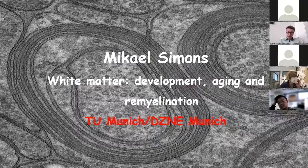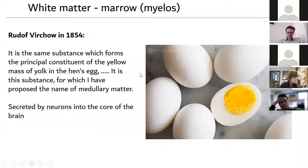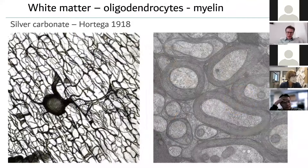I will go back in history: in 1854, Rudolf Virchow was the first to describe the white matter — the marrow of the brain — and compared it to the yolk of the egg. He thought the marrow was secreted by neurons and did not contain any cells. It was only 20 years later that Ortega discovered the main cellular component of the white matter: the oligodendrocytes.